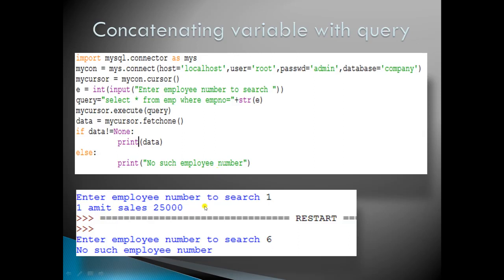When we enter 1, it gives the result for employee number 1. When we enter 6, no employee exists, so the message 'no such employee number' appears. Remember to use the plus symbol for concatenation and to convert integers to strings so the query executes correctly.